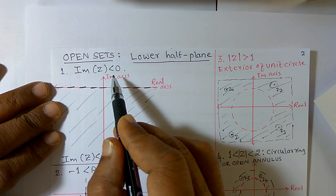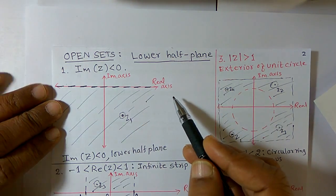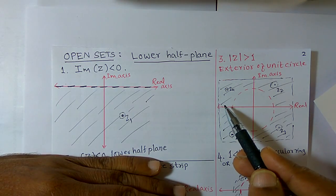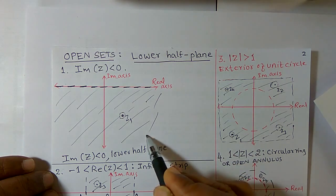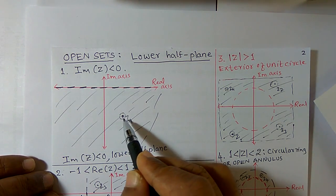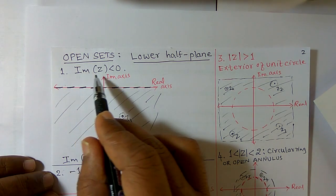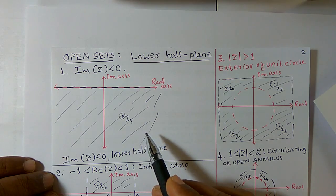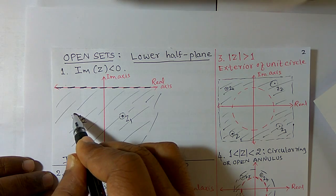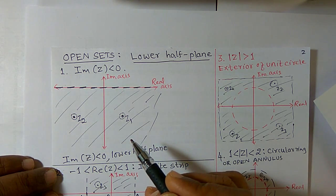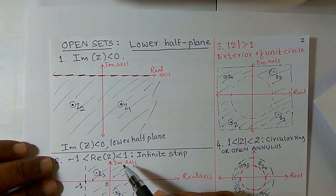Sometimes we will use the expression: imaginary part of z is less than 0, or we call it the lower half plane. The lower half plane means below the real axis. In this plane, consider any complex number, say z1. Construct an open disk — it contains some points and all those points belong to the region. Therefore, imaginary part of z less than 0 is an example of an open set. Take one more complex number z with a very small open disk radius — it still contains some points and all the points belong to the region.